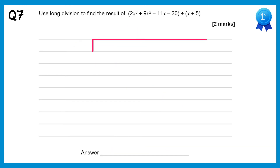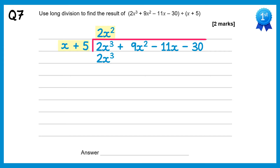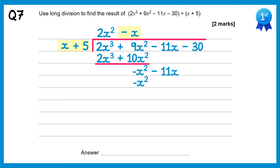We'll put the cubic inside the bus stop and the linear term outside. Do 2x cubed divided by x which gives 2x squared. Multiply 2x squared back through: 2x squared times x is 2x cubed, 2x squared times 5 is plus 10x squared. Subtract: 2x cubes will cancel, 9x squared take 10x squared is negative x squared. Bring down the next term, negative 11x. Negative x squared divided by x is negative x. Multiply back through: negative x times x is negative x squared, negative x times positive 5 is negative 5x. Subtract: negative x squareds will cancel, negative 11x take away negative 5x is negative 6x.